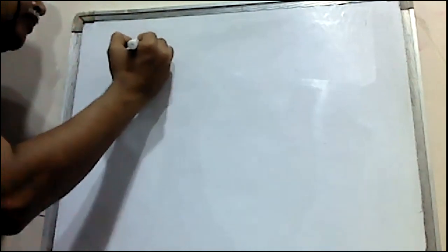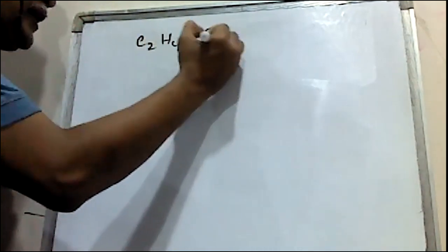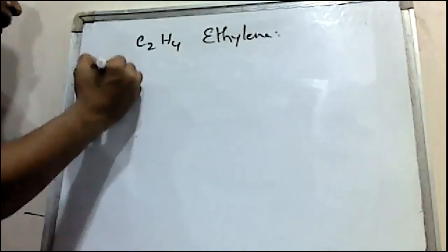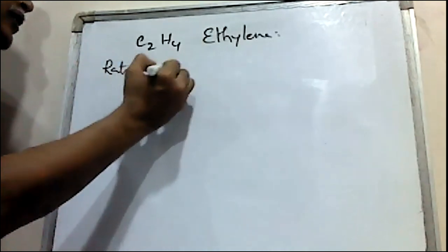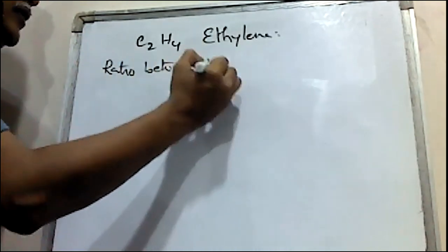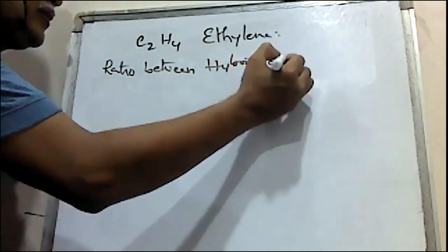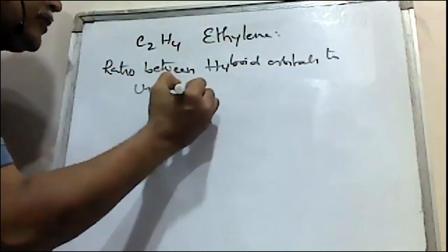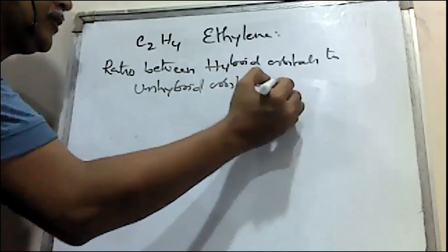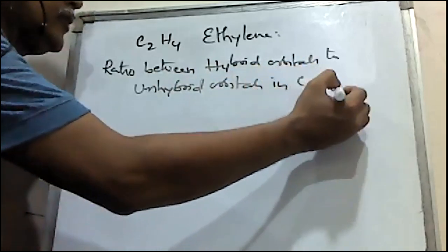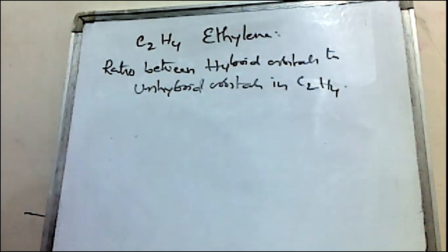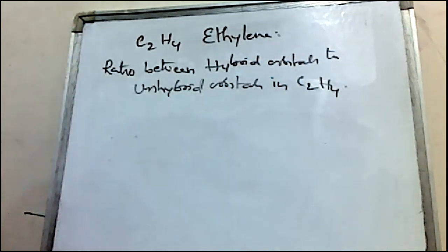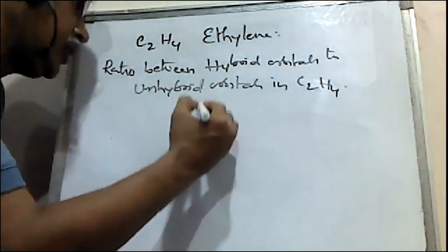For example, C2H4. The question is: find the ratio between hybrid orbitals and unhybrid orbitals in C2H4. The bond angle in C2H4 molecule is 120 degrees.